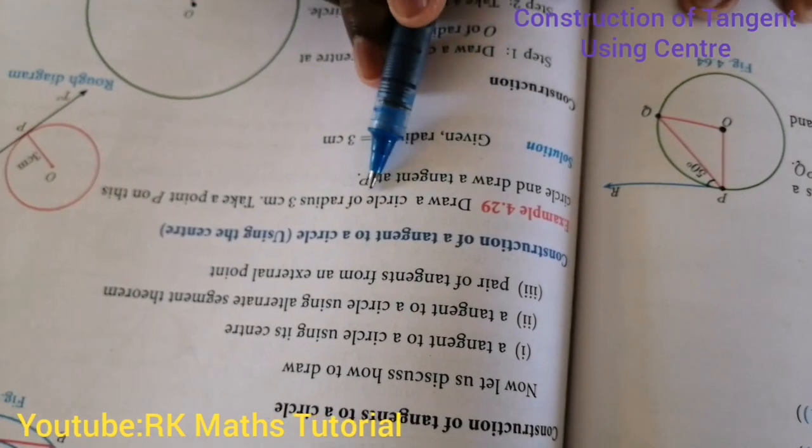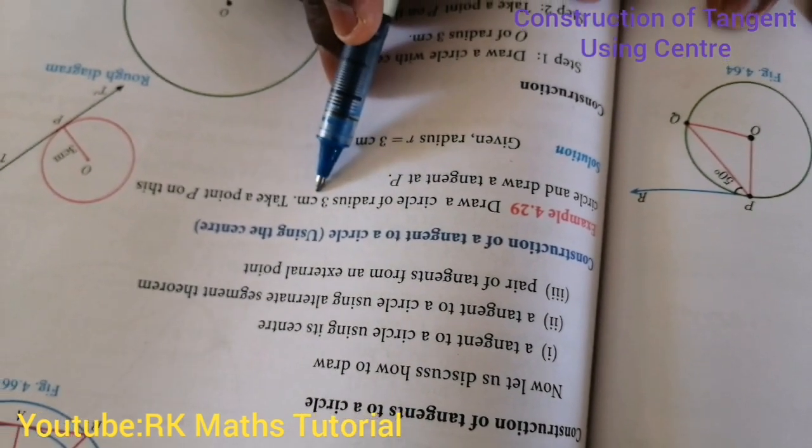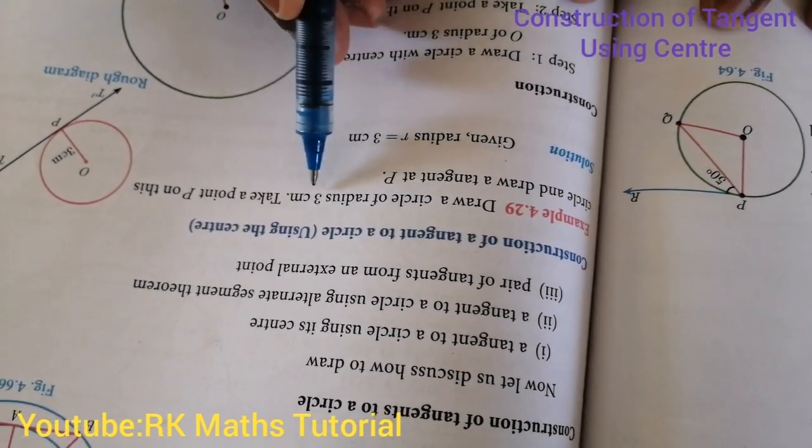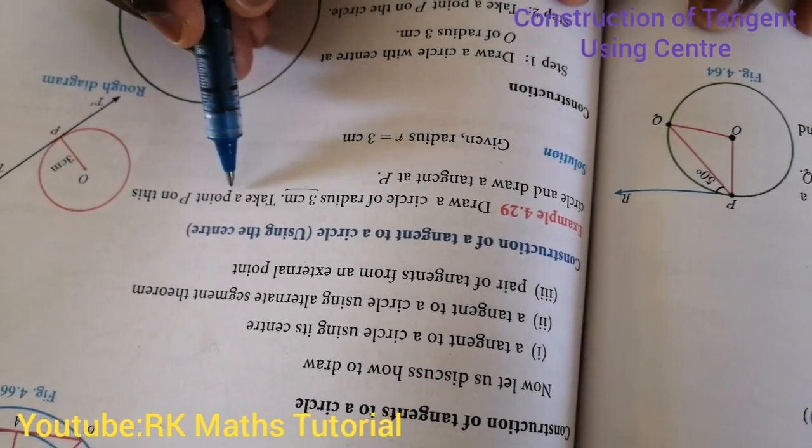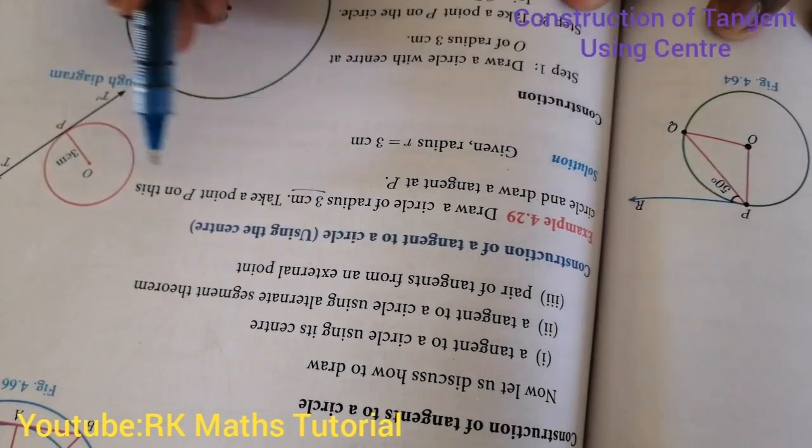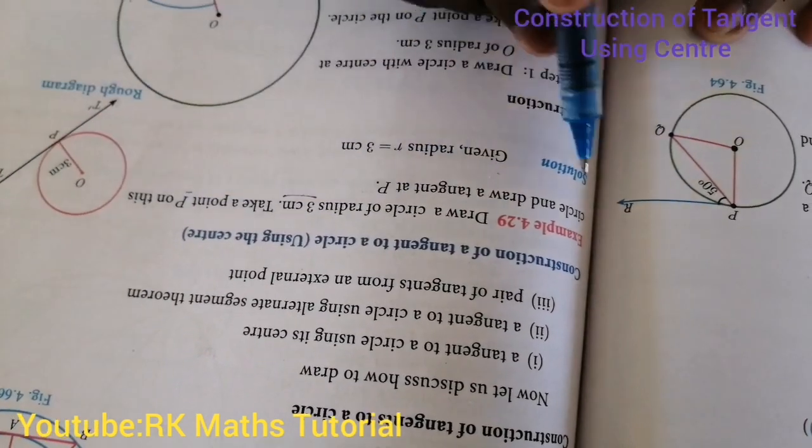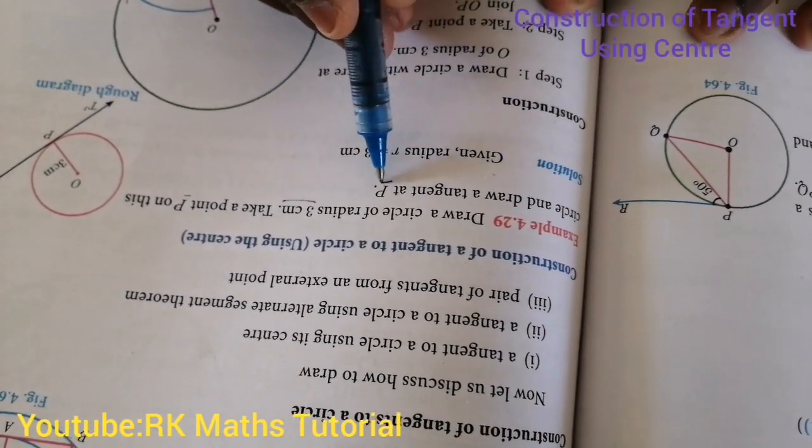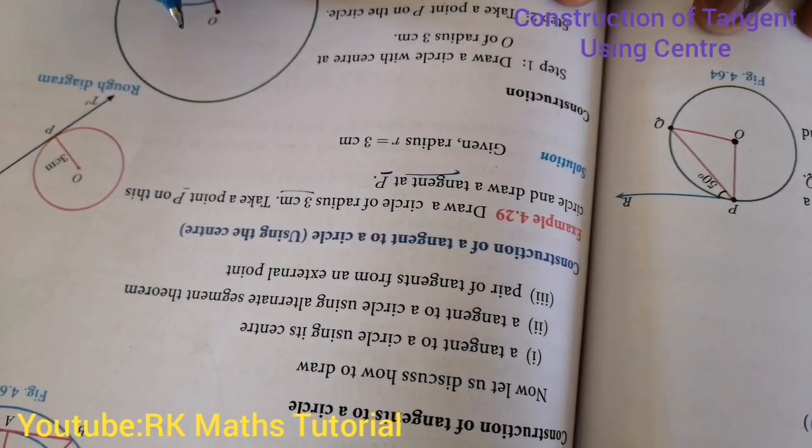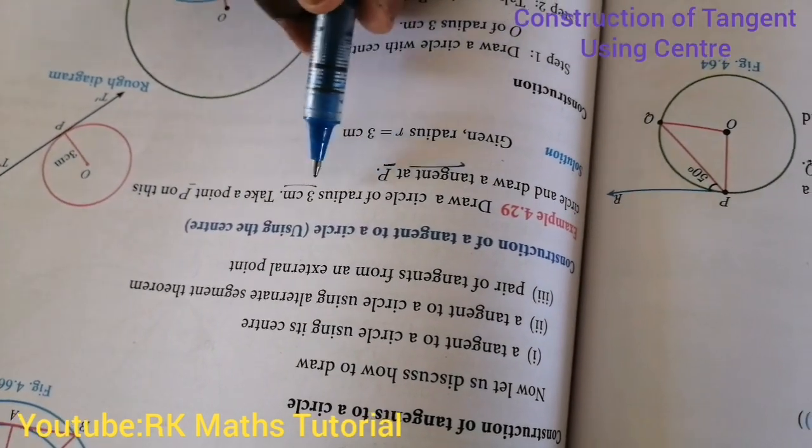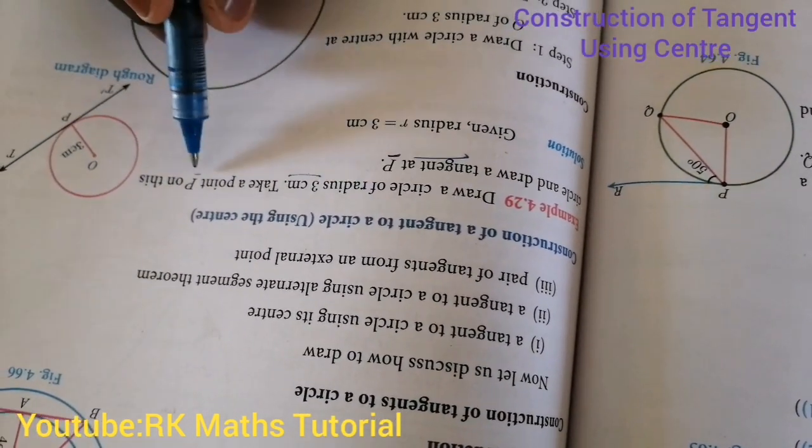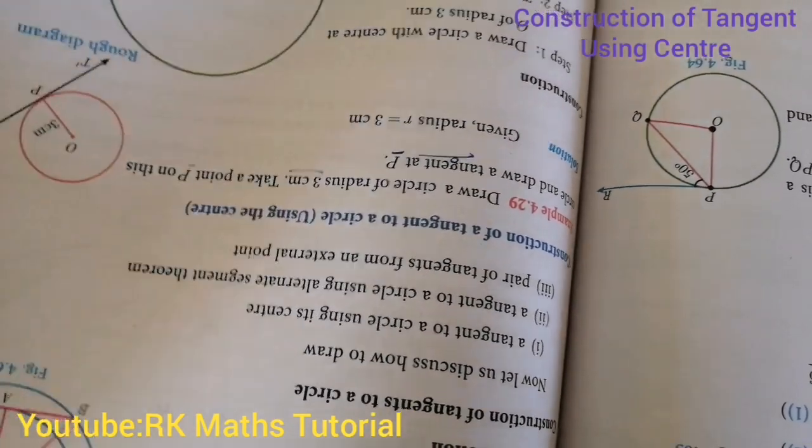Example 4.29: Draw a circle of radius three centimeters and take a point P on this circle. At point P, we need to draw the tangent. So our goal is one circle with radius of 3cm and a point P here, okay? Let's see.